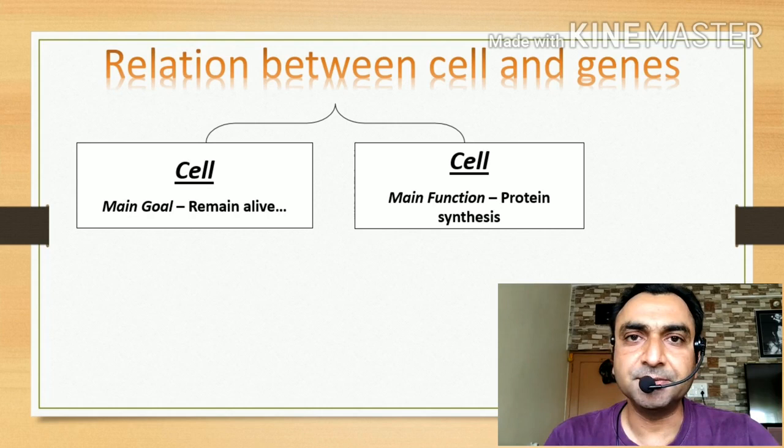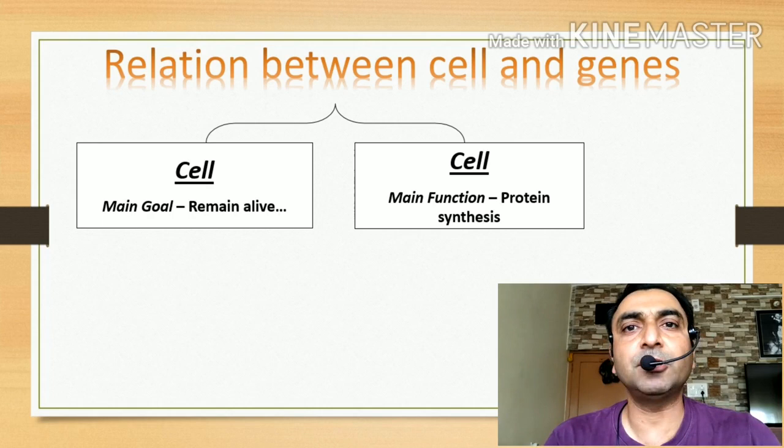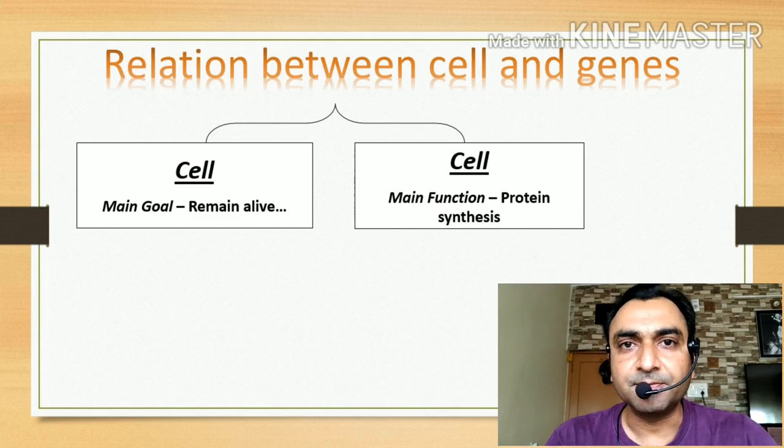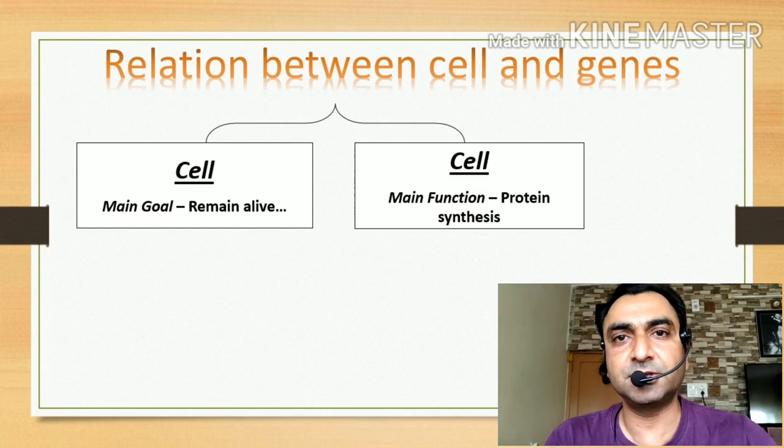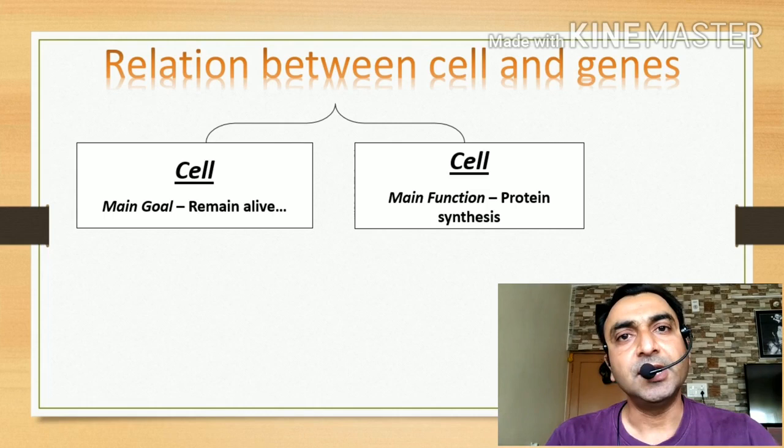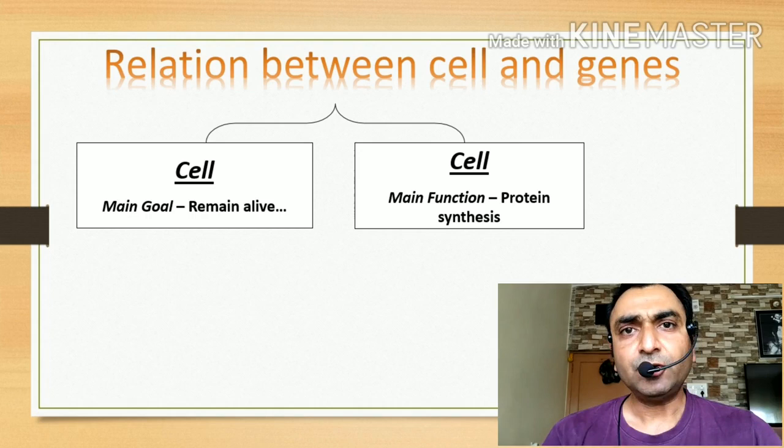Life is converted from non-living components to living organisms with prokaryotic life — that was the first phase of life. Then comes eukaryotic cells and eukaryotic life, and then eukaryotes evolved into multicellularity.